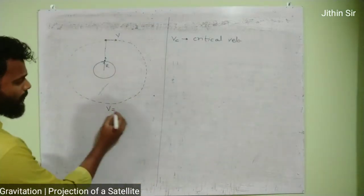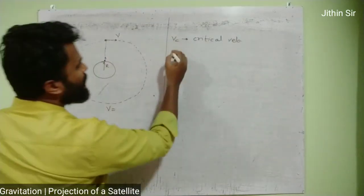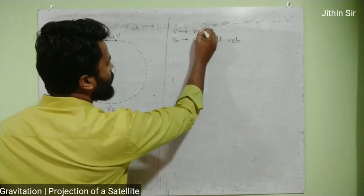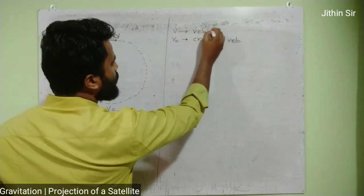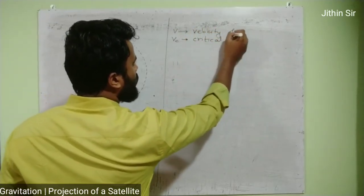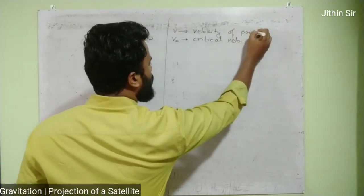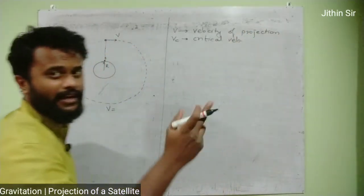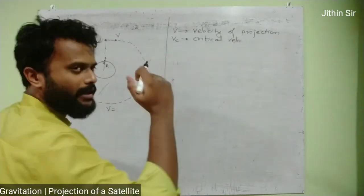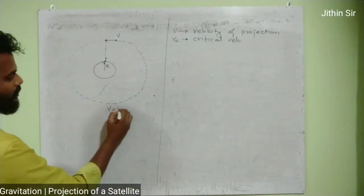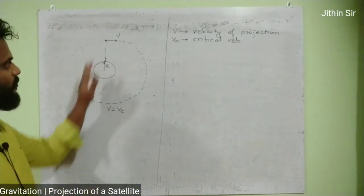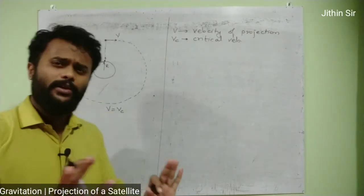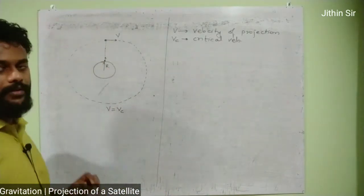Let V stand for velocity of projection — the velocity with which we sent the satellite — and Vc stand for critical velocity, which is a fixed value. So if the velocity of projection is equal to the critical velocity, there is no tension; the satellite will perform circular motion.